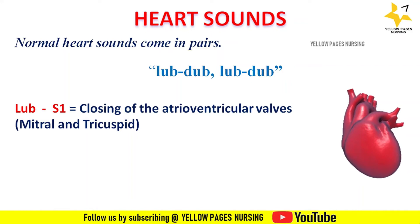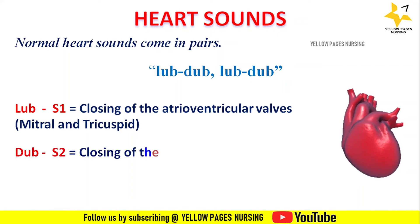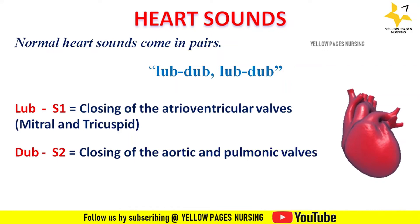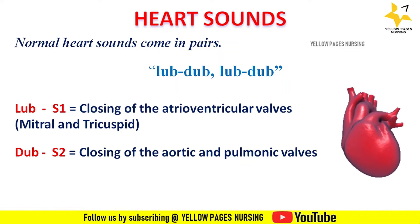The 'dub' sound is S2, which is created by the closing of the aortic and pulmonic valves, and is heard loudest at the aortic area. Both S1 and S2 are high frequency sounds which can be heard well with the diaphragm of the stethoscope.